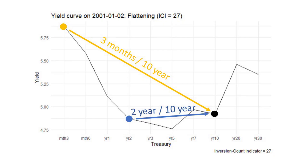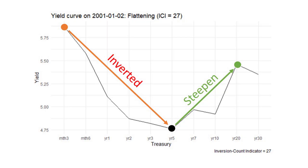Here's an example of what I mean. On this day in 2001, the 3-month 10-year spread was already inverted. But the 2-year 10-year spread? Well, it was flattening, but it's not flat yet, and it definitely wasn't inverted. And just to highlight how extreme this can be, on this very same day if we took the 3-month 5-year spread, it is very inverted. But if you took the 5-year 20-year spread, it is very steep.